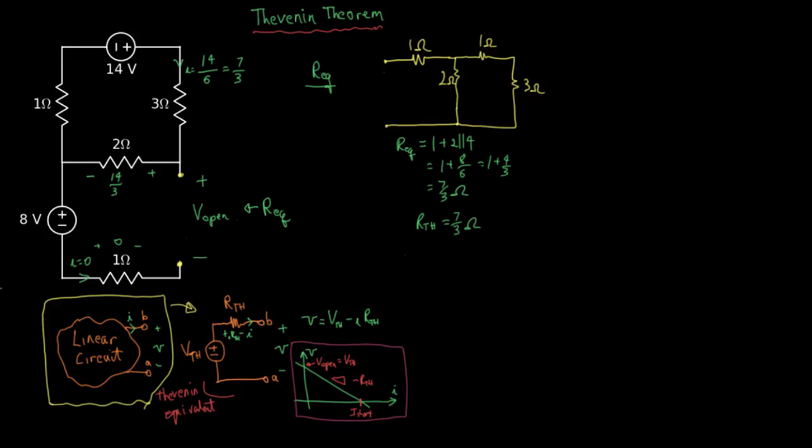That means we can solve for the open circuit voltage. It is zero plus eight plus 14 thirds. 24 thirds plus 14 thirds is 38 thirds. That is in volts. And so our Thevenin voltage is 38 thirds.